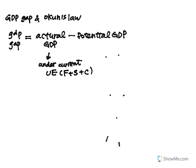And potential GDP is the GDP under natural rate of unemployment, and we know that natural rate of unemployment is equal to frictional unemployment plus structural unemployment.